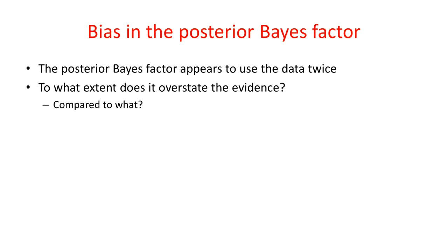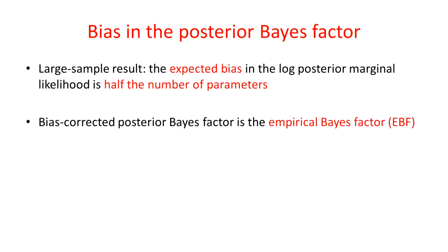Well, to answer that, we have to decide what we are comparing the posterior Bayes factor to. Our proposal is to look at the Bayes factor you would expect to get from an independently supplied prior. We can calculate the resulting bias and in a large sample, it turns out that the bias in log scale is half the number of parameters. If we correct the posterior Bayes factor for that bias, we get empirical Bayes factors.